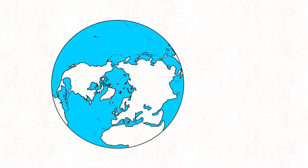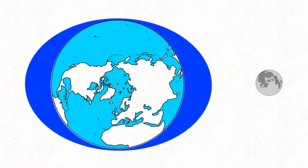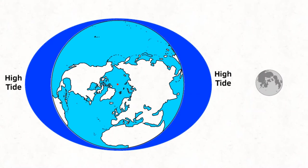What causes this tide to come in and go out? Well, first of all, about 70% of the planet is covered in water. There are a number of factors that affect the movement of this water, but the main one for the tides is actually the moon. The moon's gravitational force pulls the mass of water towards it, giving us the high tides, and perpendicular to this we get our low tides.